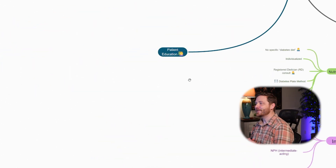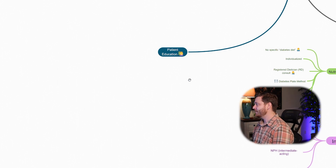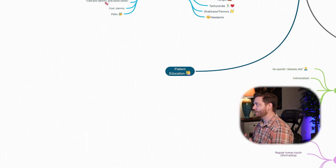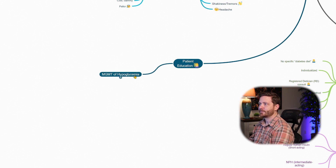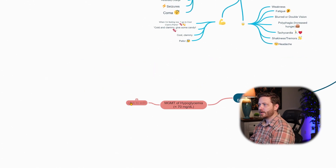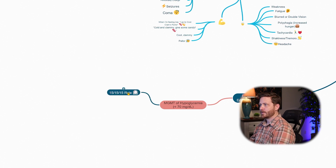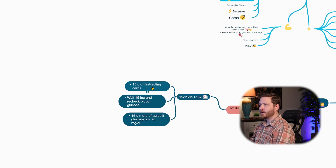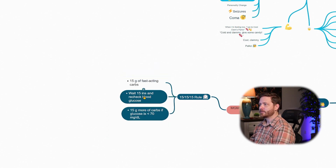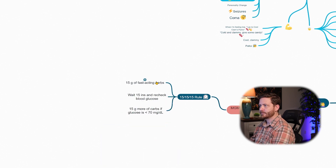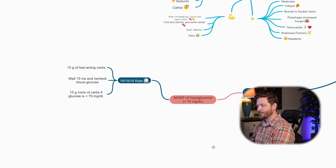Our patient education starts off with management of mild hypoglycemia using the 15-15-15 rule, then moves into nutrition therapy. Let's add in our 15-15-15 rule to the mind map: 15 grams of fast-acting carbs, wait 15 minutes, recheck the glucose, then give 15 more if glucose is not above 70 yet. Let's hop over to Anki and make a card over the 15-15-15 rule.